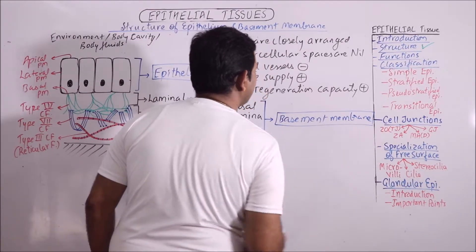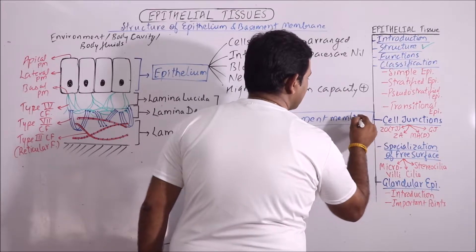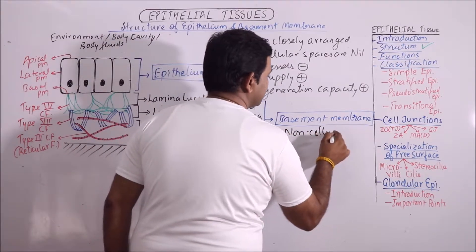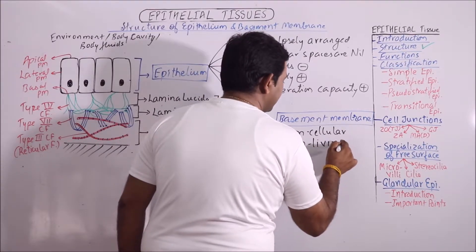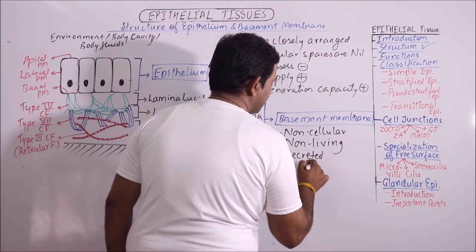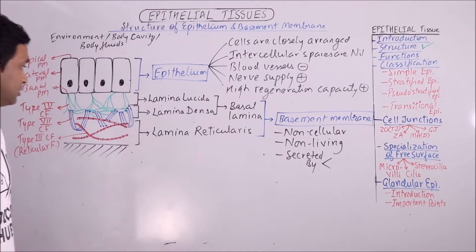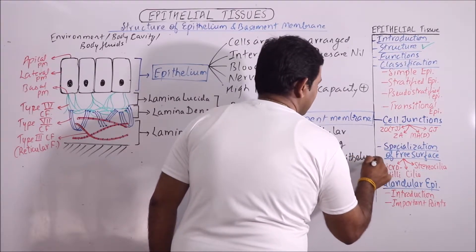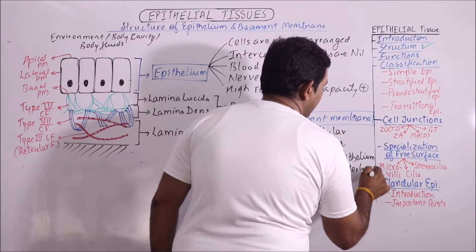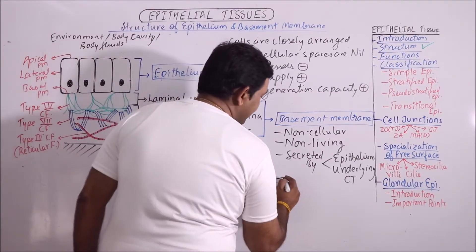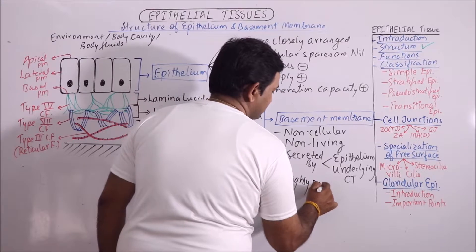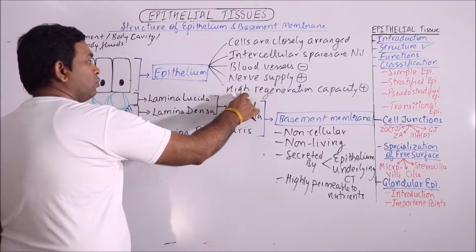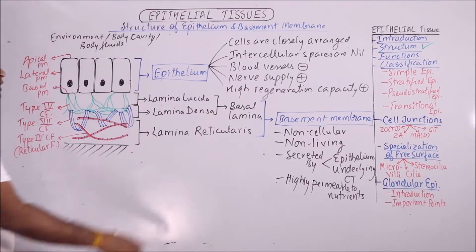Now, a few important points about the basement membrane: this layer is non-cellular and non-living, as cells are not present. It is secreted by the two layers in between which it is sandwiched — that is, the epithelium and the underlying connective tissue. It is highly permeable to nutrients, which is why the high regeneration capacity of epithelium exists in spite of lacking blood vessels.